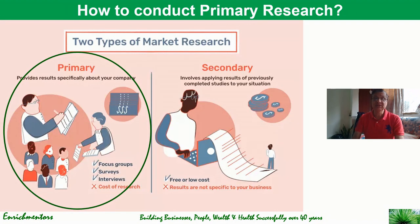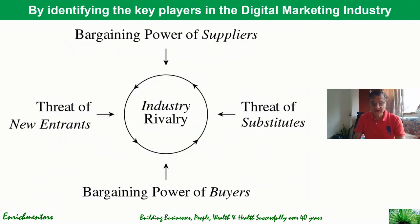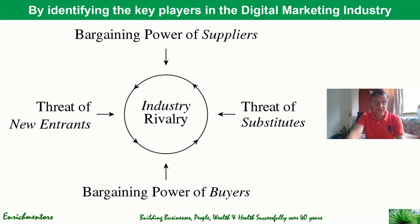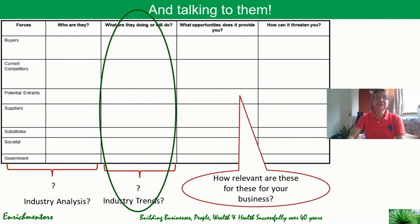Now let's look at how to conduct primary research. For primary research, you need to identify the key players in your industry — specifically the digital marketing industry. You can very beneficially use Michael Porter's Five Forces model, which identifies five forces: suppliers, buyers, industry competitors, substitutes, and possible new entrants. You need to identify these key players in the digital marketing industry, because what you want to determine are the trends in digital marketing.